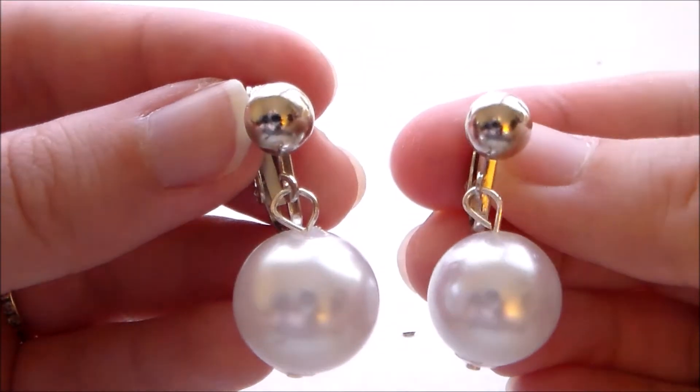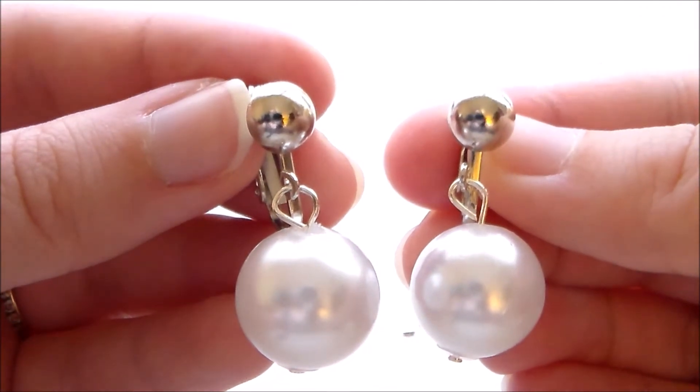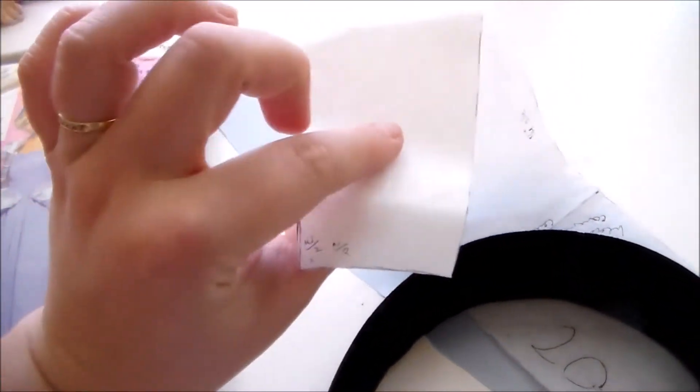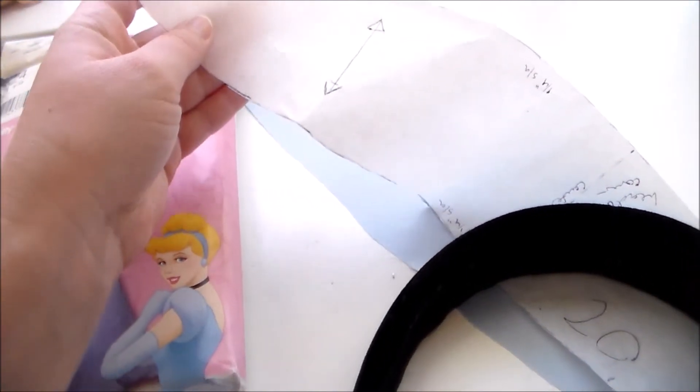Repeat this process so that we have a completed pair of earrings. To make Cinderella's headband, I am using the same pattern that I used for the dress, and transferred that onto some tissue paper because I didn't want to cut the original pattern.